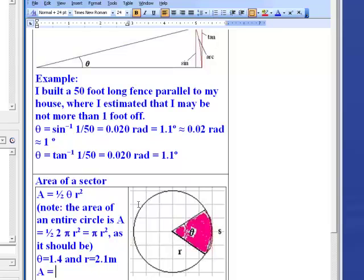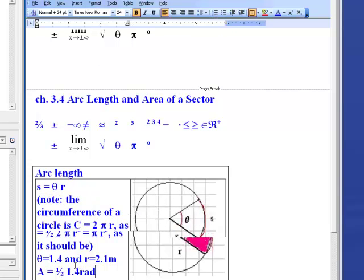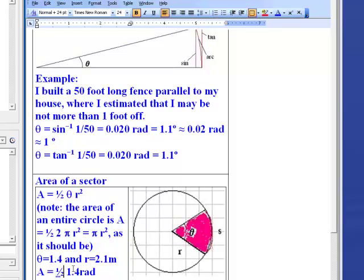One-half times 1.4 radians, and maybe if I can grab it, I want to get a times. Here it is. Times 1.4 radians times 2.1 meters squared. And when I do that on the side, it's going to be 0.5 times 1.4 times 2.1 squared. And I come up with a rounded 3.1 square meters.